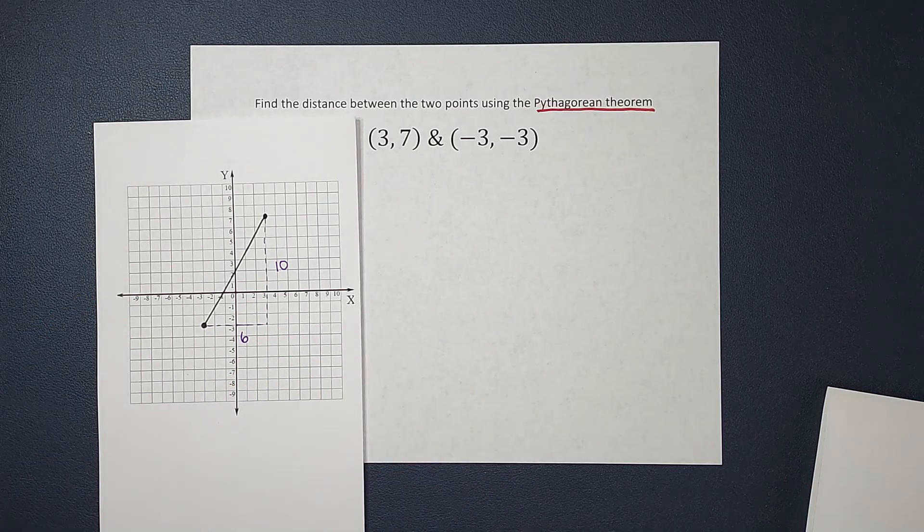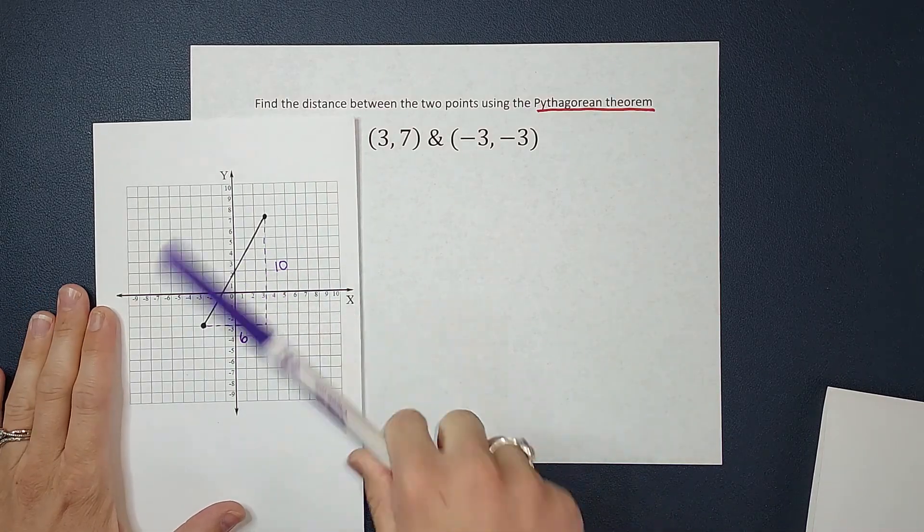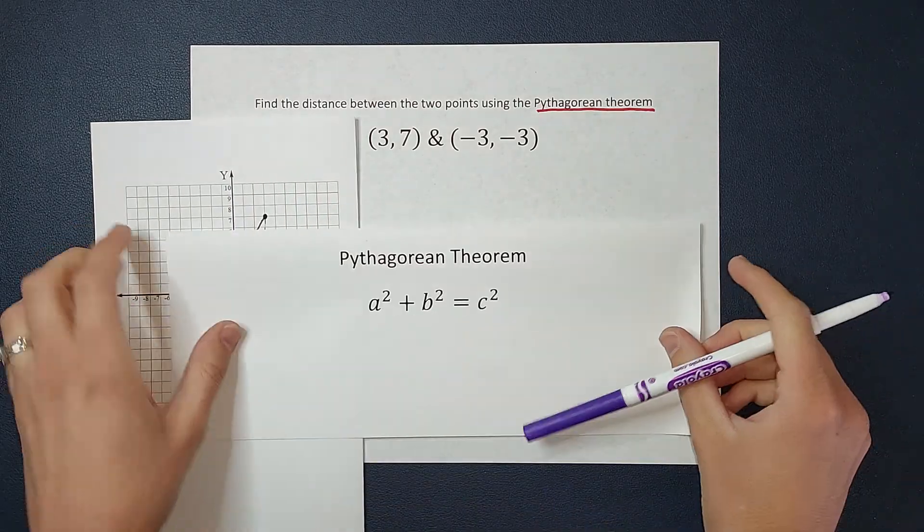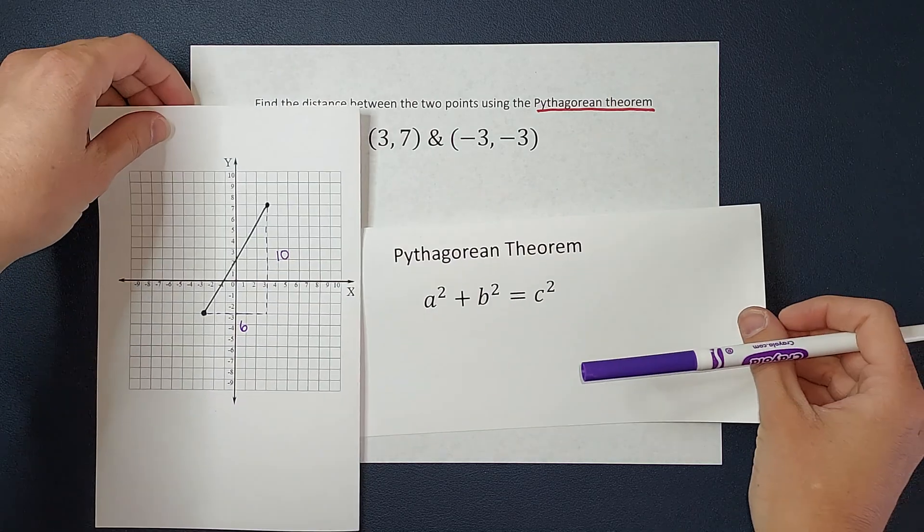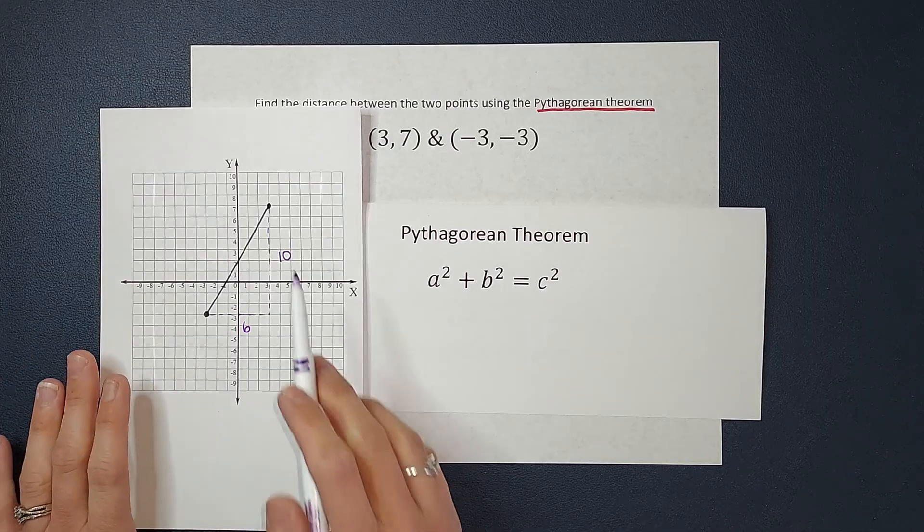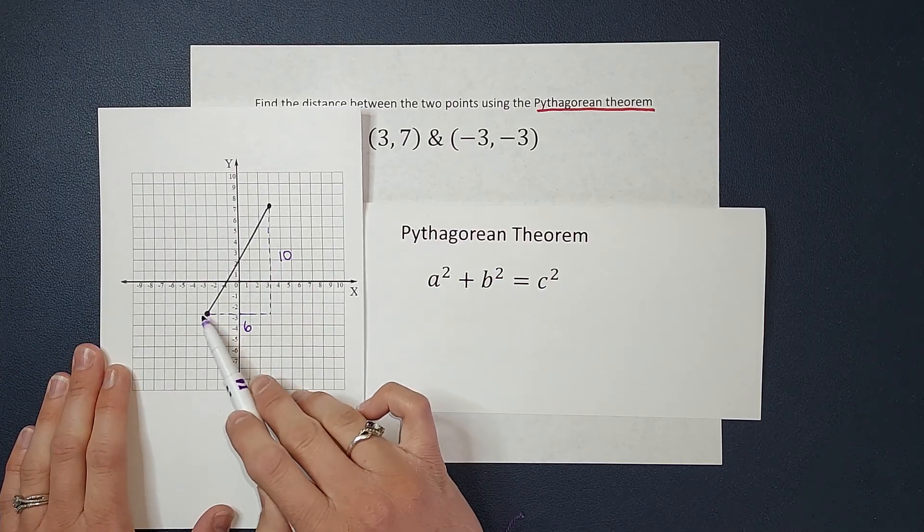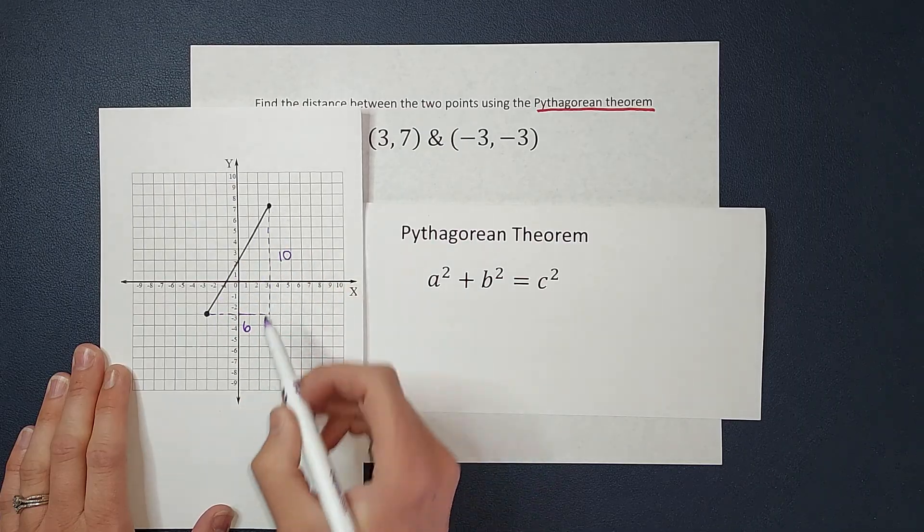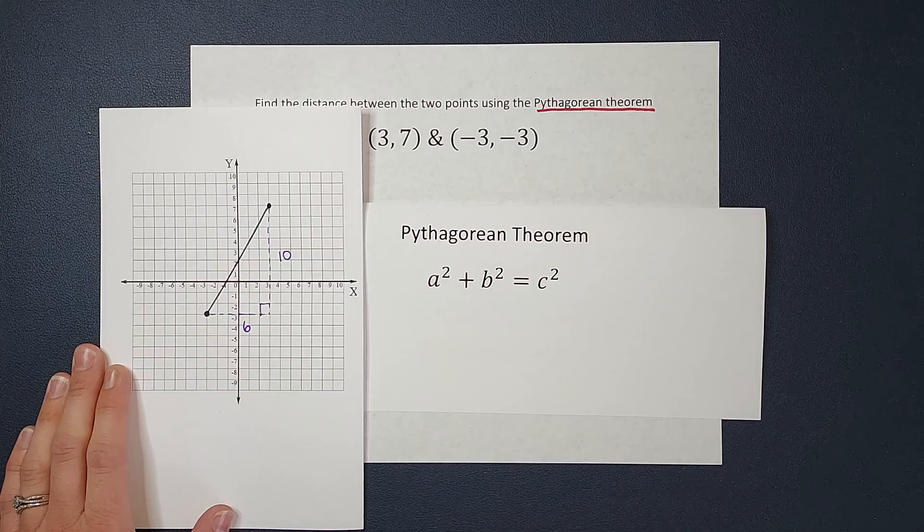All right, so now we have a right triangle where I know two of the sides. If I know two of the sides, I can find the third side using the Pythagorean Theorem. When I use the Pythagorean Theorem, my legs of the triangle are the a and b, and the hypotenuse, the one across from my right angle here, is c.